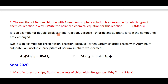The reaction of barium chloride with aluminum sulfate solution is an example for double displacement reaction, because exchange of partner ions takes place in the solution. The balanced chemical equation is: Al₂(SO₄)₃ plus 3BaCl₂ gives 2AlCl₃ plus 3BaSO₄. BaSO₄ is the precipitate formed.